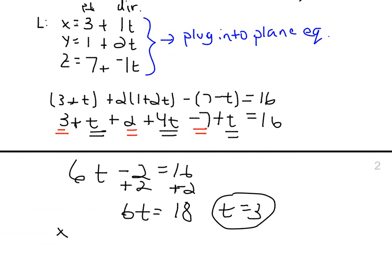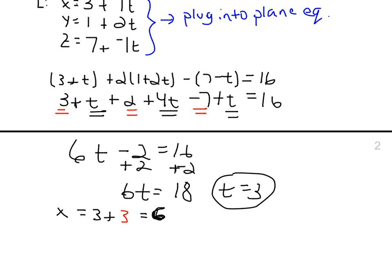Well, what point is that? At time t equals 3, x is 3 plus 3, which is 6. y is 1 plus 2t, so that's 7. z is 7 minus 3, which is 4. So the point that we're in search of, that is closest to the other point, has coordinates (6, 7, 4).